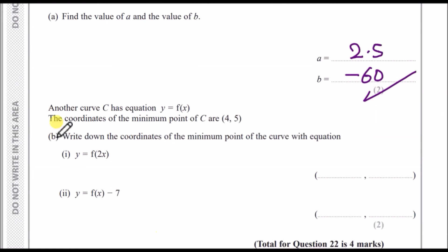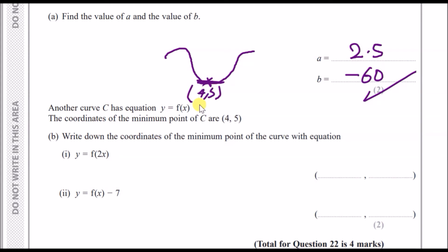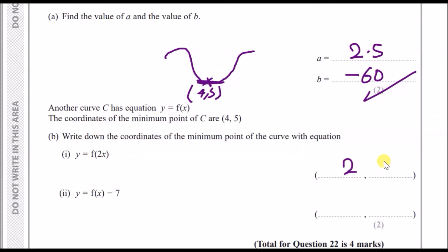For the next part: another curve C has equation y = f(x), and the coordinates of the minimum point of C are (4, 5). For y = f(2x), all the x-values are replaced by 2x, which means we halve the x-coordinate. So instead of 4, we get 2, and the y-coordinate stays the same — giving the minimum point (2, 5).